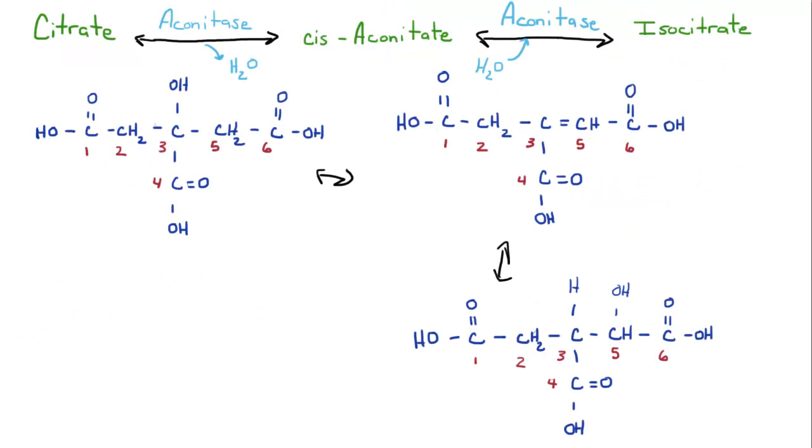The next step is a two-part process in which citrate is reconfigured, moved like some of the stuff is moved around, and you get this molecule called isocitrate. This is called an isomerization reaction. It is done by the enzyme aconitase.